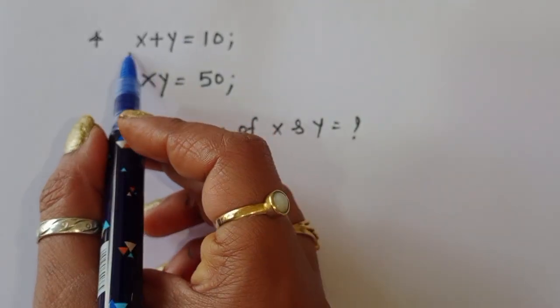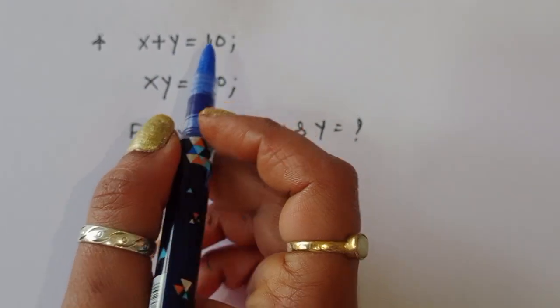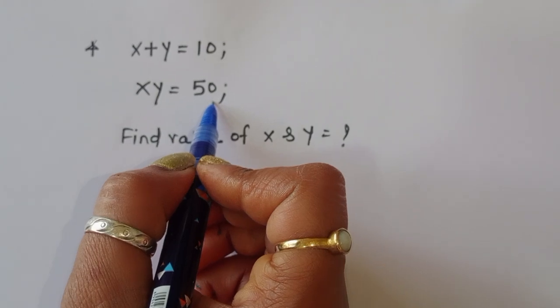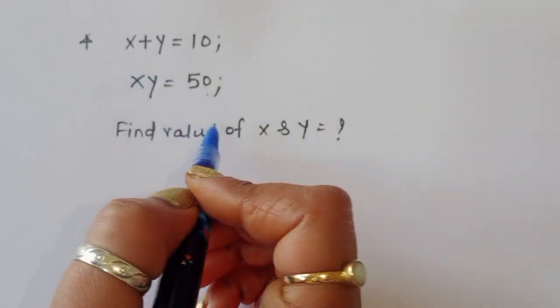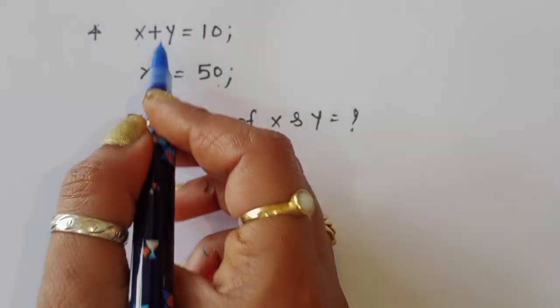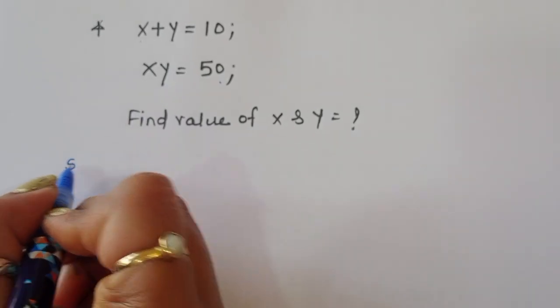The question is: given x plus y is equal to 10 and xy is equal to 50, we have to find out the value of x and y. Let's see the solution.